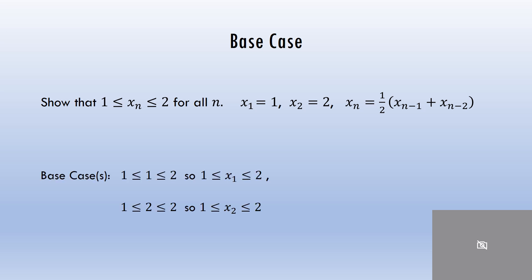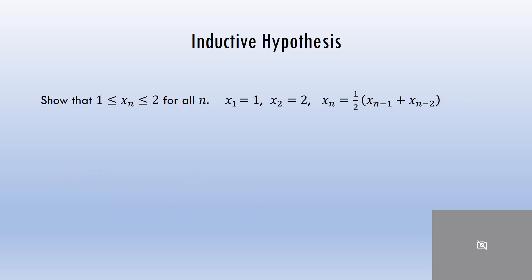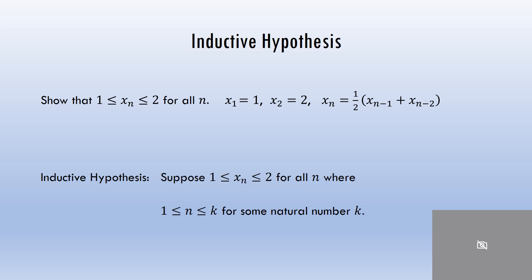So my base case is: 1 is indeed between 1 and 2, and 2 is between 1 and 2. Now let's look at the inductive hypothesis. I want to show that x sub n is between 1 and 2 for the first k elements in my sequence. So: suppose x sub n is between 1 and 2 for all n, where n is between 1 and k for some natural number k. This just means that it's always between 1 and 2 up until k.